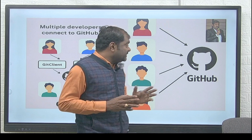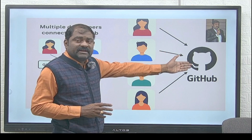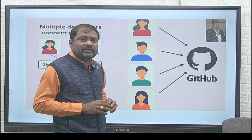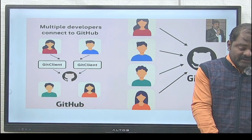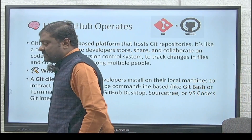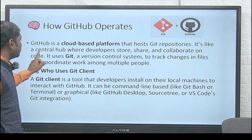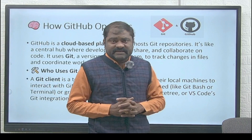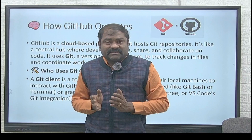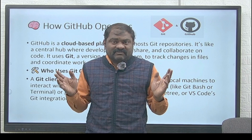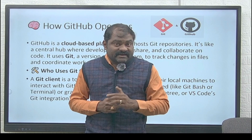Multiple developers — Developer 1, Developer 2, Tester 1, Tester 2 — connect to the GitHub repository. They clone the code, modify it, and push the modifications back to GitHub. You must not confuse GitHub and the Git client. GitHub is a cloud-based platform that hosts Git repositories — it is like a central hub where developers store, share, and collaborate on code. Developers must install the Git client on their machines. For example, if 10 developers work on the same project across 10 laptops, every developer must install the Git client.